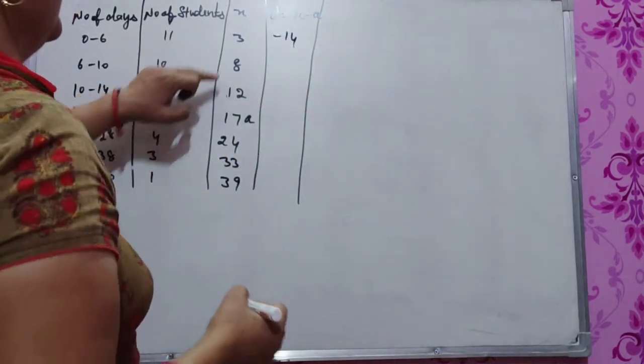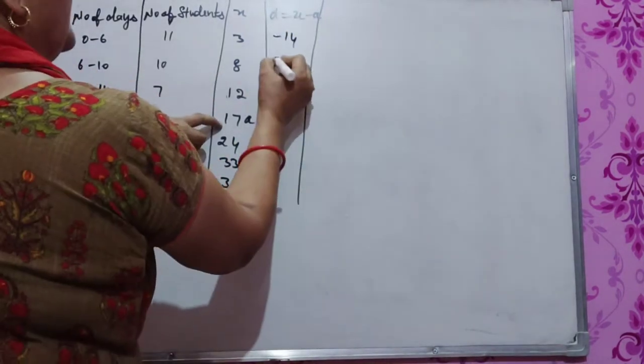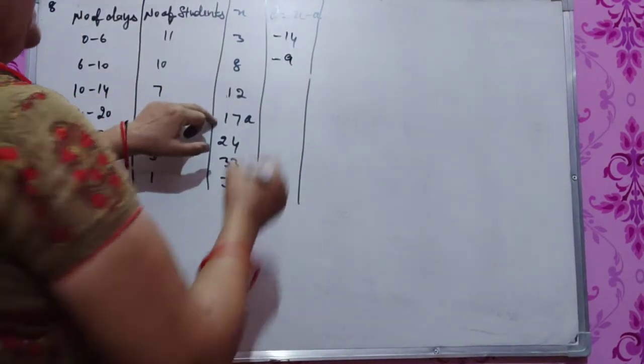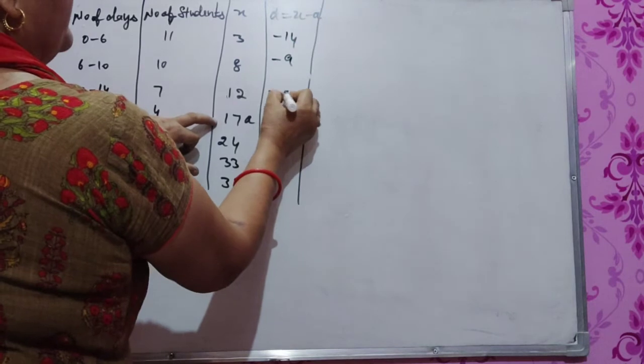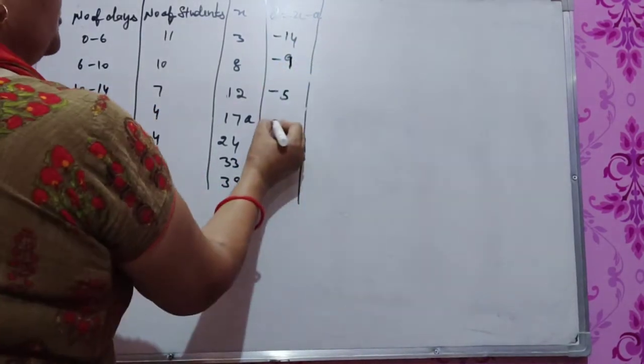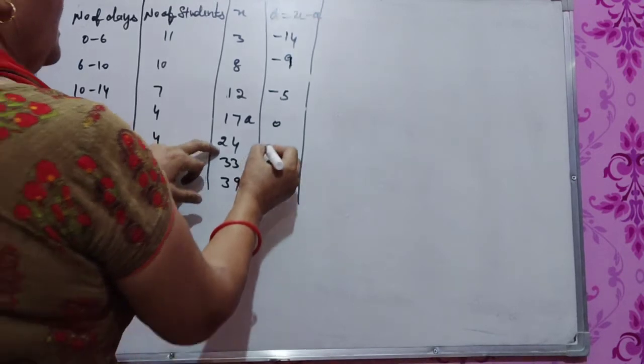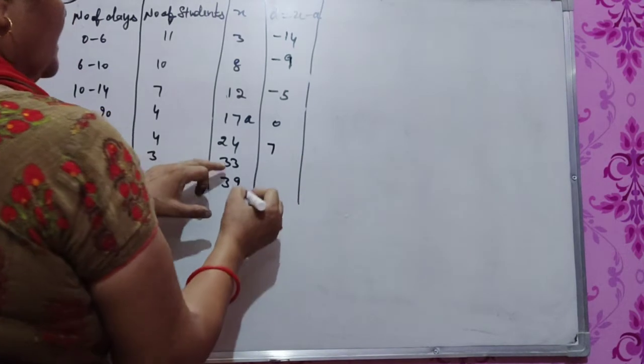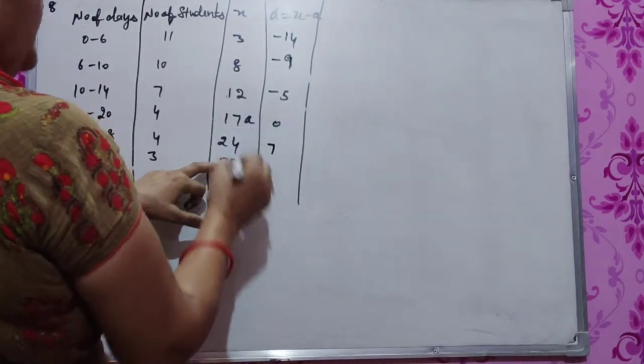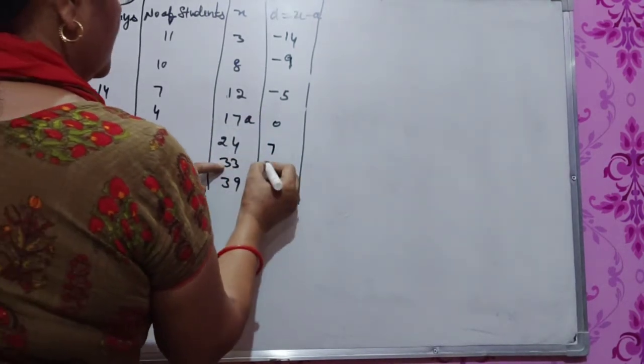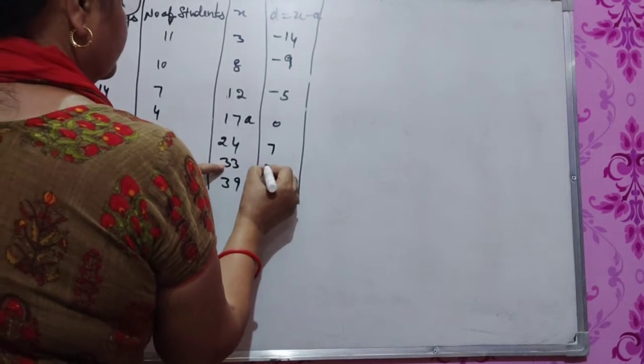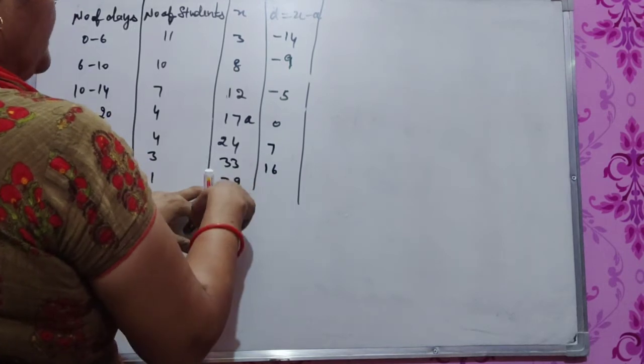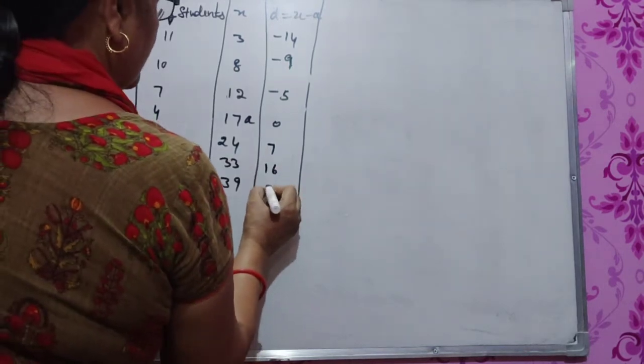Now, 3 minus 17 minus 9, 8 minus 17 minus 9, 12 minus 17 minus 5, 17 minus 17 is 0, 24 minus 17 is 7, 33 minus 17 is 16, 39 minus 17, we have 22.